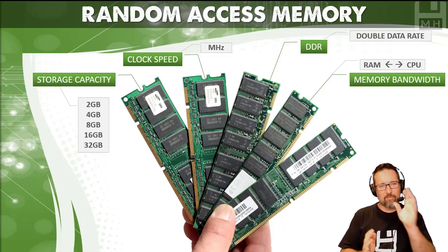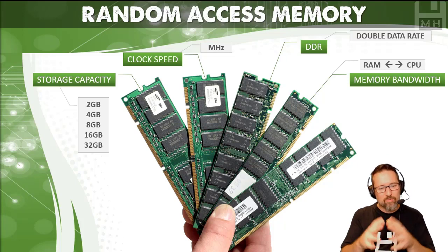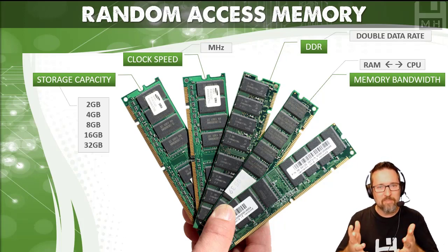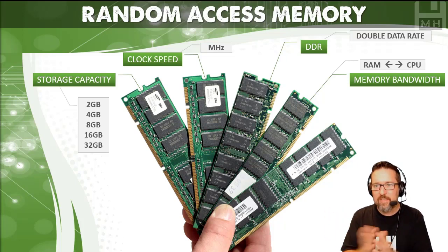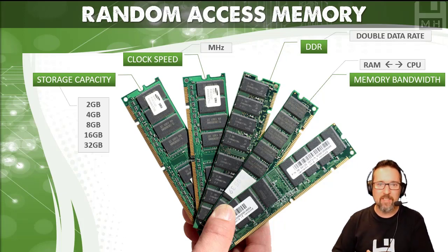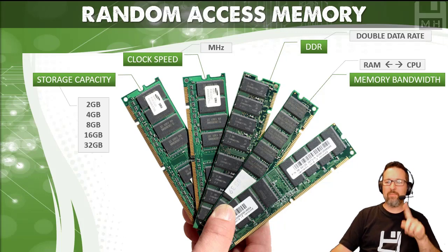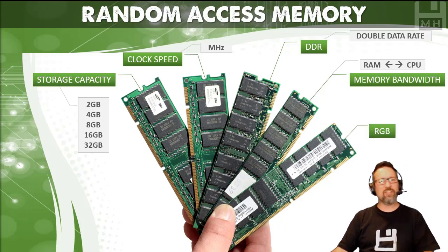Then we have memory bandwidth. Memory bandwidth has to do with the relationship between the RAM and the CPU. It's basically the rate at which the RAM can read and write data to and from the processor. The faster they can transfer data between each other, the better your computer is going to be.